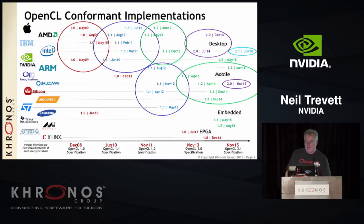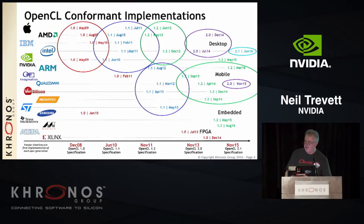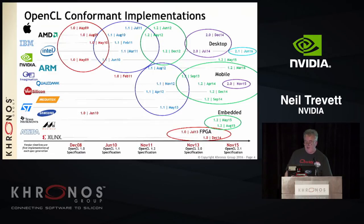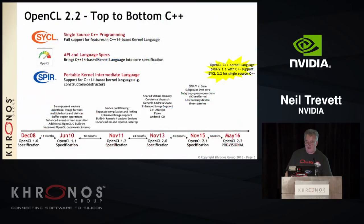Mobile tends to follow about a year or two behind. The sweet spot on mobile right now is 1.2. Qualcomm has the first 2.0 implementation, which shipped a month or two ago. OpenCL 1.0 is now running conformantly on FPGAs, and you can get good performance for a good class of applications. DSP vendors like TI and Marvell are increasingly shipping OpenCL 1.2, so coverage is pretty good.